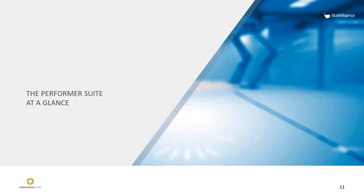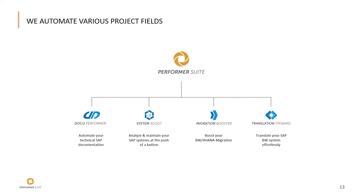Before we jump into the migration booster, I would like to give you a chance to look at the performance suite one more time. The migration booster is part of the performance suite, but the suite contains three other products. We have the Docu Performer for the automated creation of documentation of technical developments, the System Scout for system analysis, the Migration Booster for BW4HANA migration work, and last but not least the Translation Steward, which is used to translate BW new object descriptions. Docu Performer, System Scout, and Translation Steward are not going to be part of this tutorial — if you're interested, please feel free to contact us.